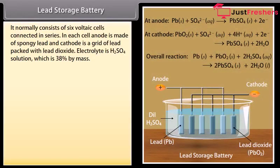Lead storage battery. It normally consists of 6 voltage cells connected in series. In each cell, anode is made of spongy lead and cathode is a grid of lead packed with lead dioxide. Electrolyte is H2SO4 solution which is 38% by mass.